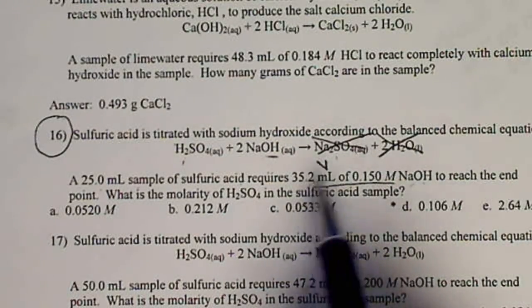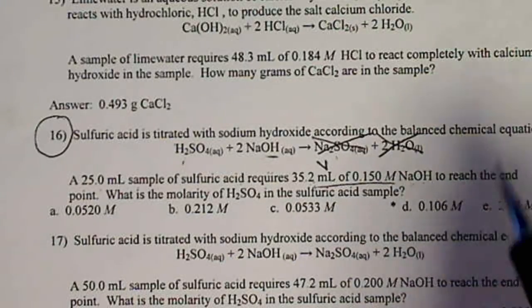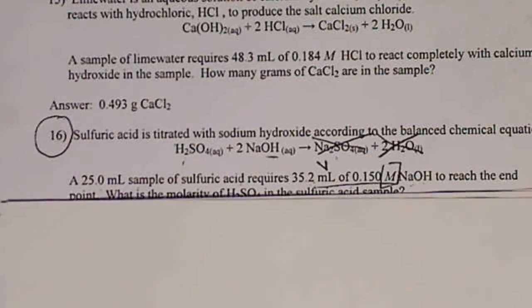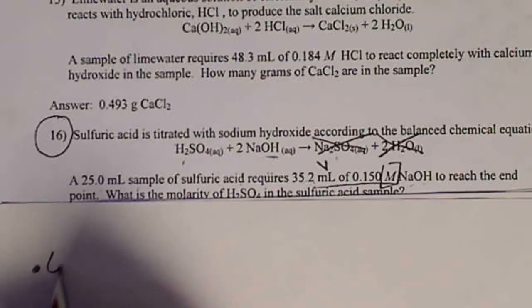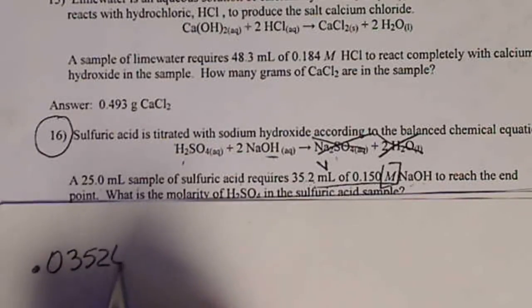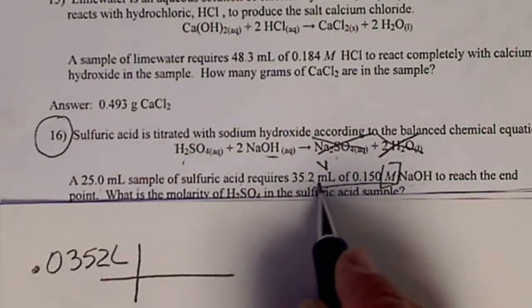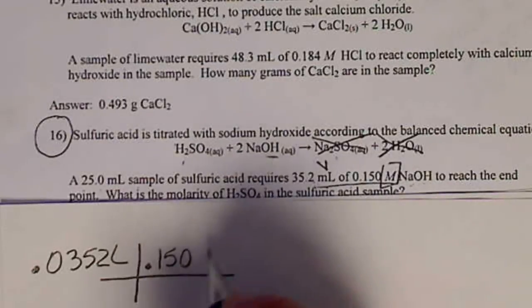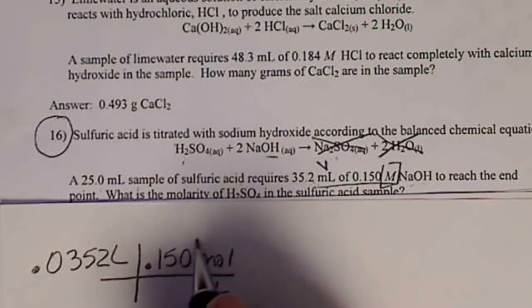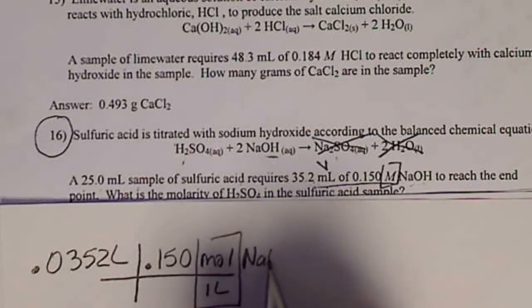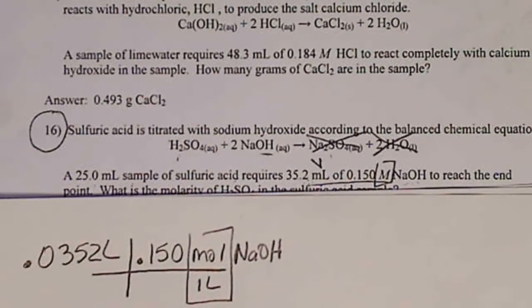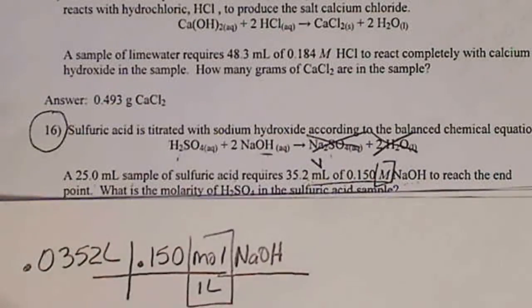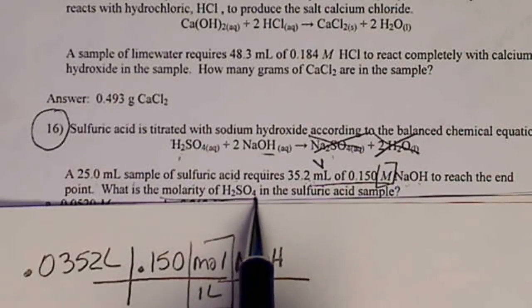Anyway, just to work this problem, I'm going to convert this volume to liters and multiply it by this concentration. Remember, capital M is a mol per liter. So if I do that, this volume is 0.0352 liters. And it's that volume of this formula. This is 0.150. Capital M, remember, means mol per one liter. And this is the NaOH. So I'm going to use that. And if I look at the problem again, it's asking me for the molarity of H2SO4.